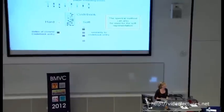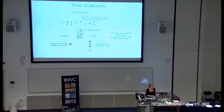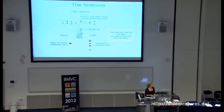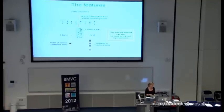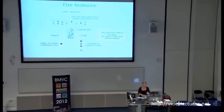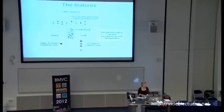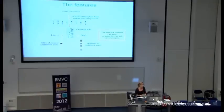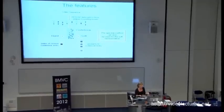For features, for every frame we compute HOG3D descriptors computed around player bounding boxes. We have two representations: one maps the descriptor to its closest codebook entry (hard assignment), and another maps it to a distribution over codebook entries proportional to similarity to each codebook entry (soft assignment). A spectral method can be derived for both representations.